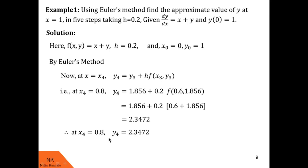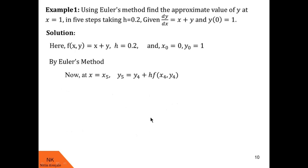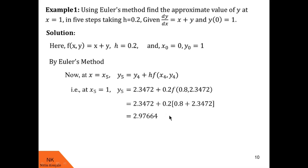Finally, we calculate the value at x5. x5 = x4 + h = 0.8 + 0.2 = 1. By Euler's method, y5 = y4 + h·f(x4, y4). Substituting y4 = 2.3472, x4 = 0.8 and h = 0.2, we get y5 = 2.97664. This is the required solution of the differential equation dy/dx = x + y with the given initial condition.